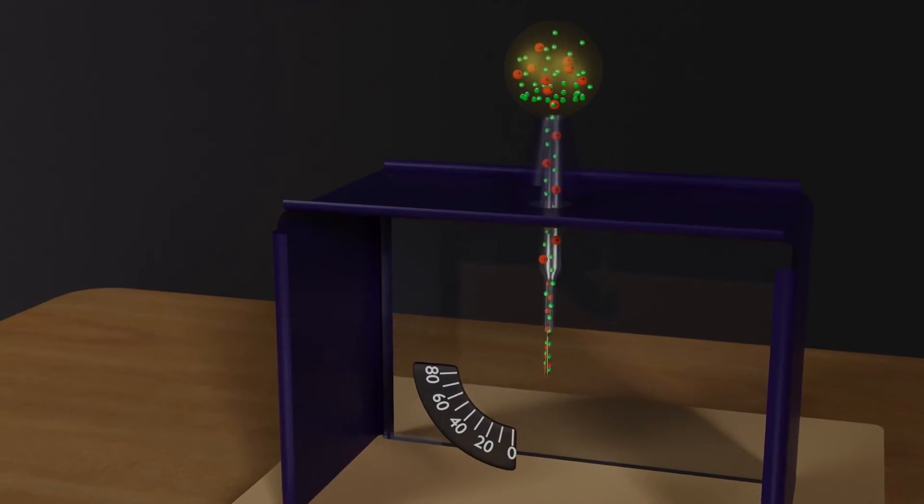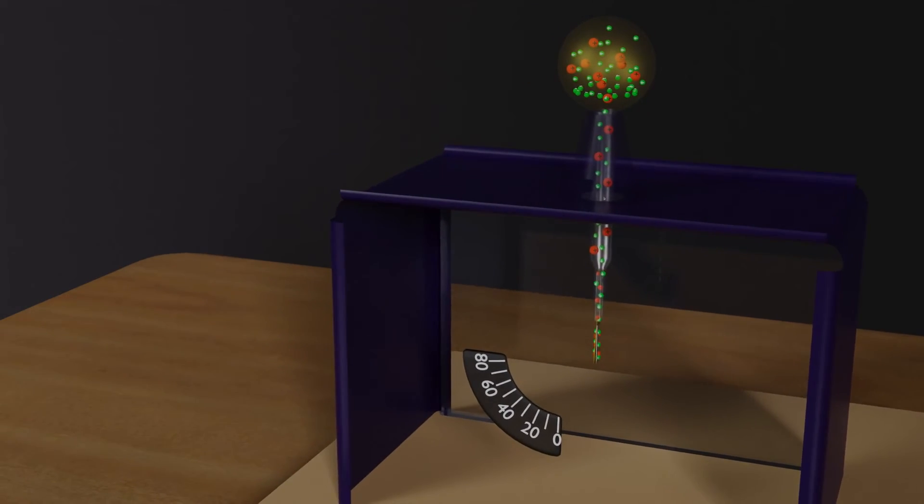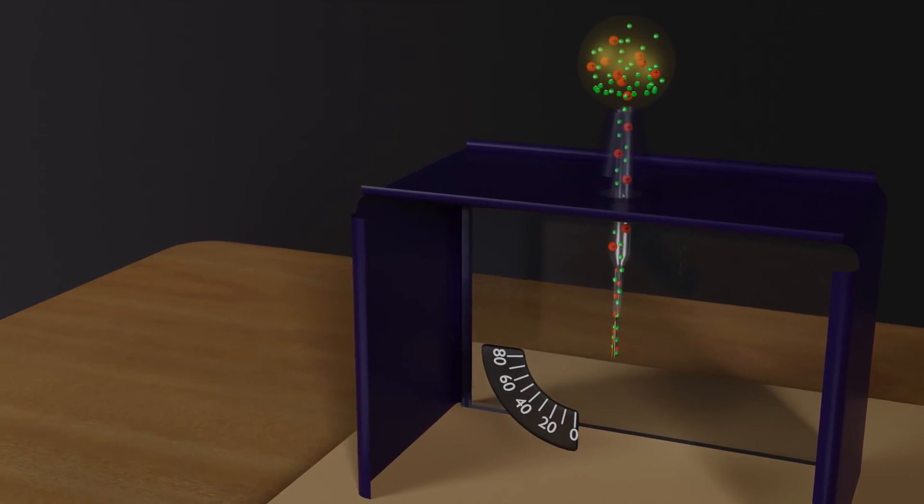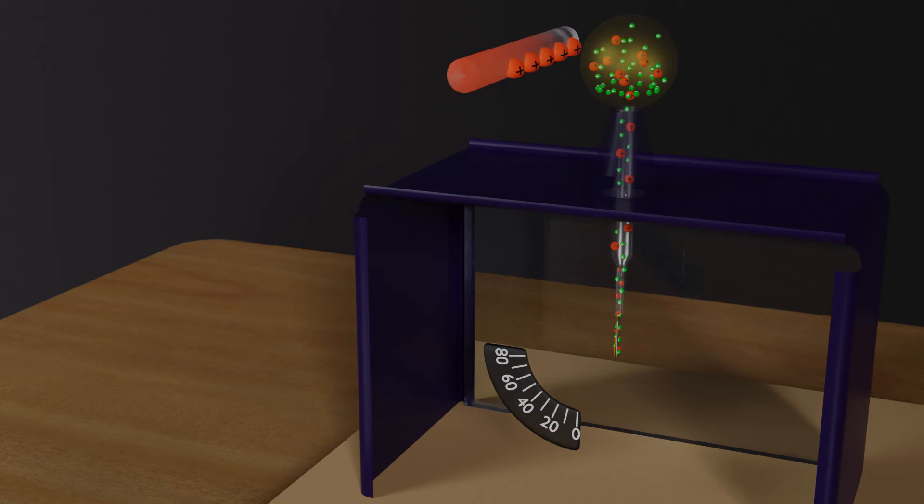To determine the charge of an object using an electroscope, we need to first give the electroscope a known charge. This can be done by touching a positively charged glass rod to the conducting sphere of the electroscope.